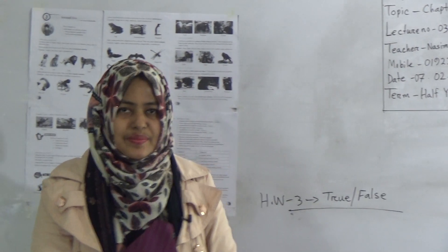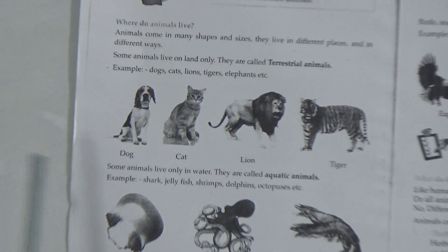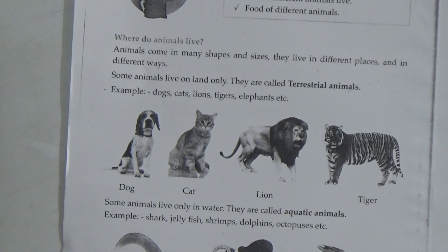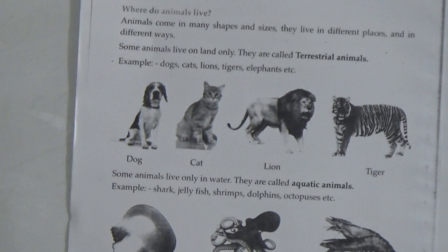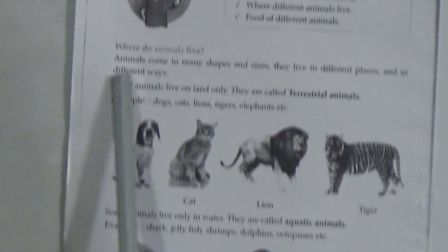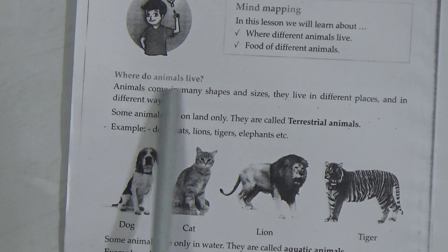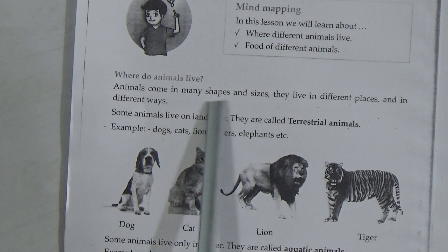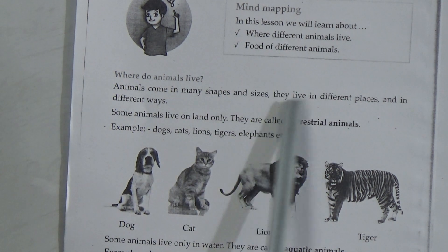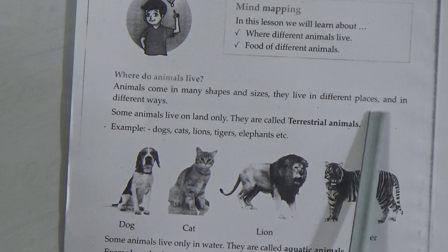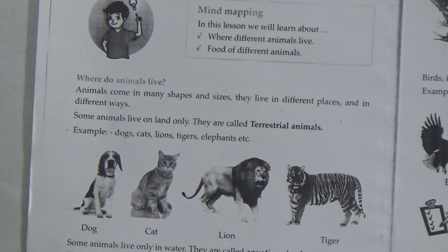Dear students, let's begin the class. When you are watching this class, you will open your book to page number 24. Let's see what is written here. Where do animals live? Animals come in many shapes and sizes. They live in different places and in different ways.